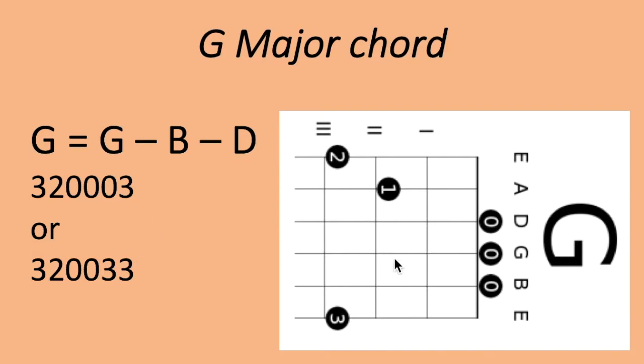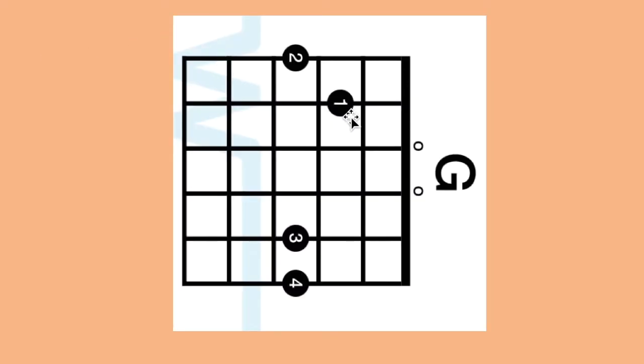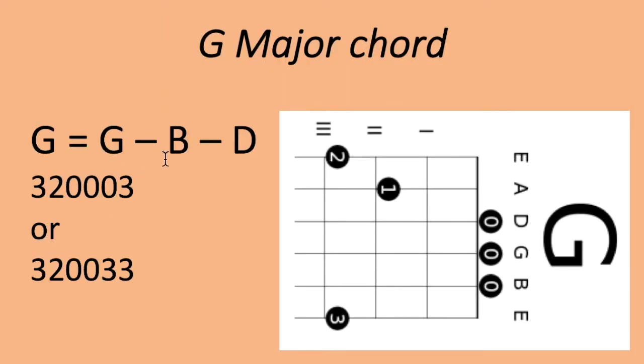So here we can see the pictures. For example if you look at this picture, strings 1-2-3 are numbered and it shows 3-2-0-0-0-3. 3rd fret, 2nd fret, and here 3rd fret. This is the first variation of G chord friends, and the second variation is like this where you use your pinky finger on the 3rd fret.